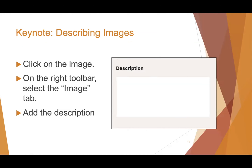Describing images in Keynote is really simple as well. You just click on the image. On the right toolbar, there's an image tab that pops up, and at the bottom of that image tab is a description box where you can write the alt text.